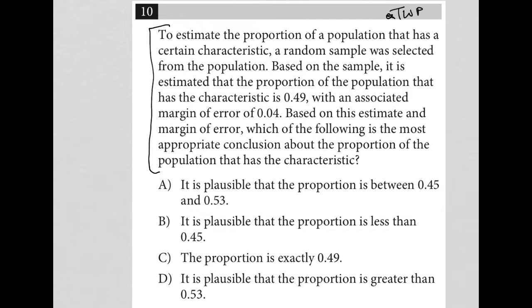So the first sentence here says to estimate the proportion of a population that has a certain characteristic, a random sample was selected from the population. Okay, I think I understand what that's saying.